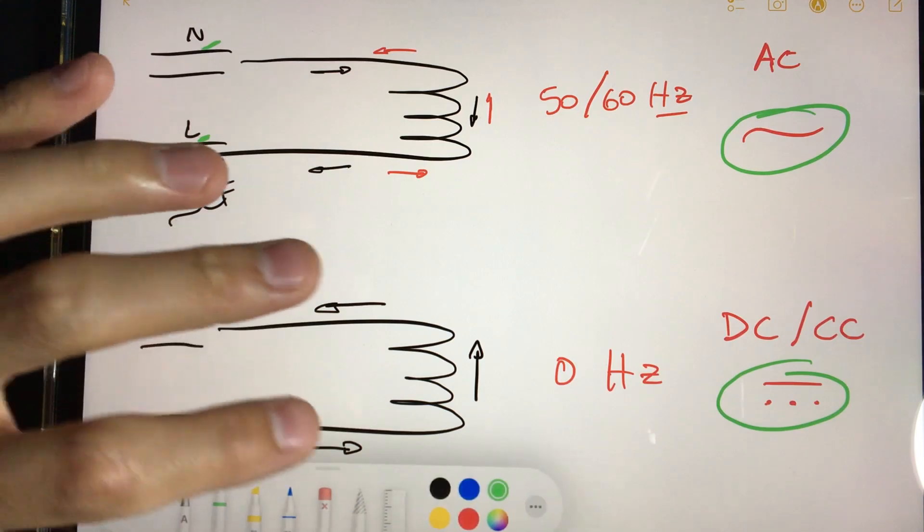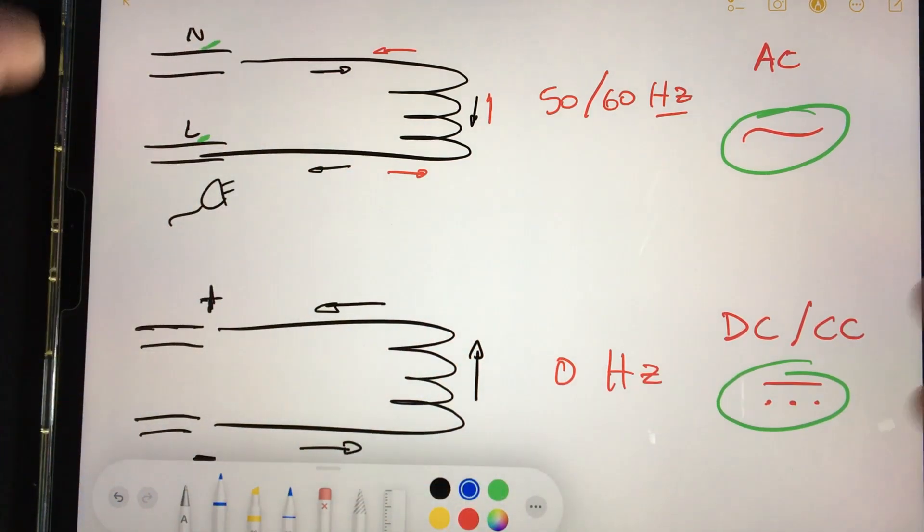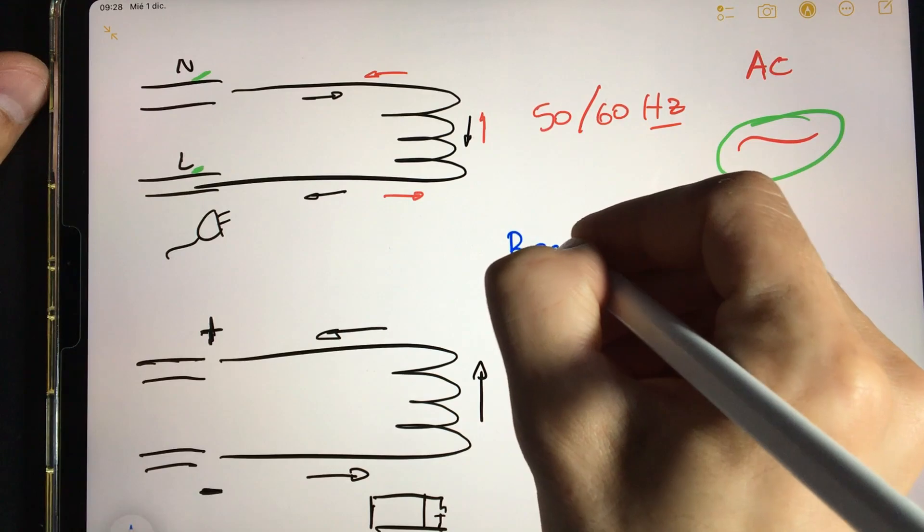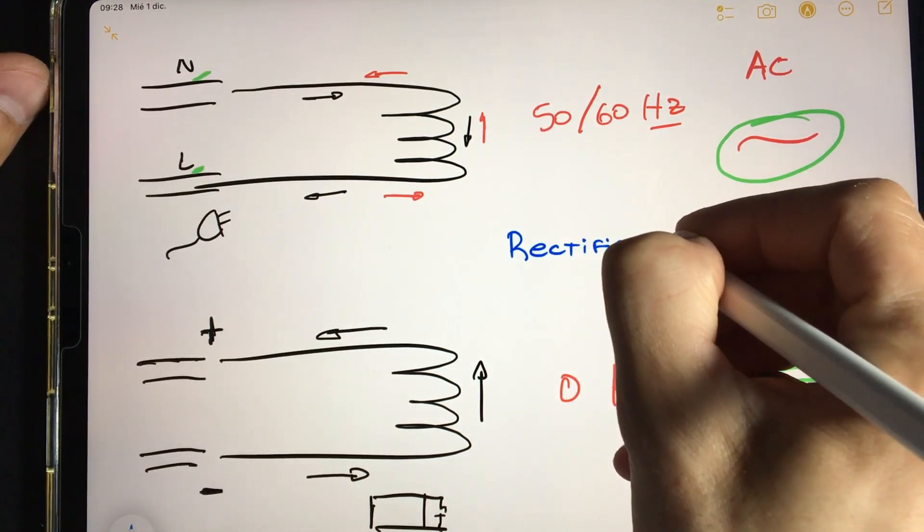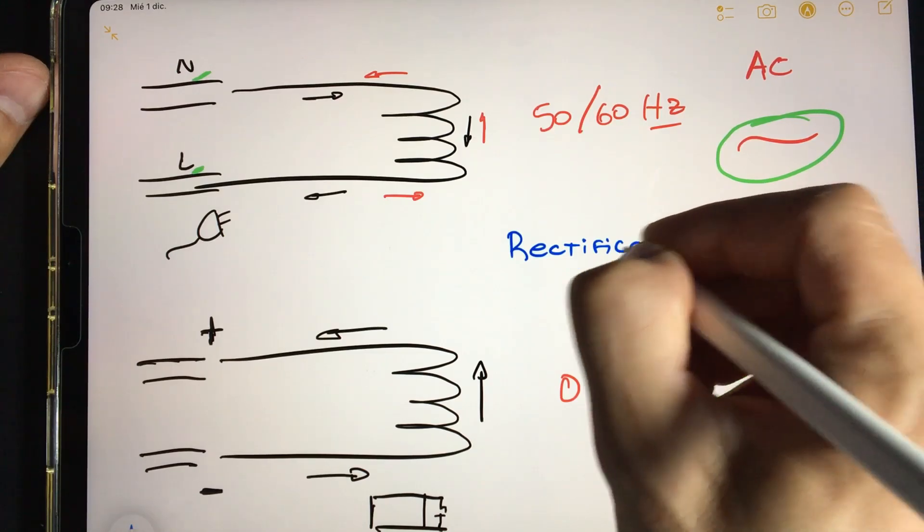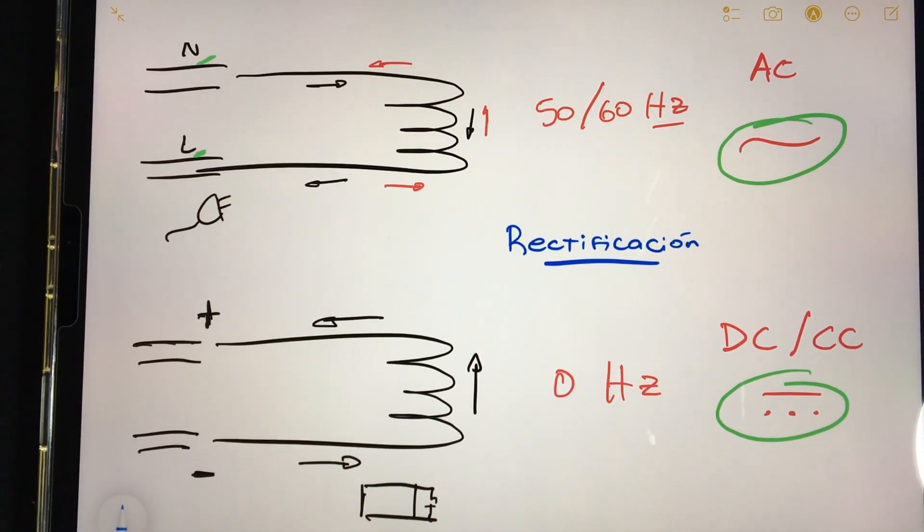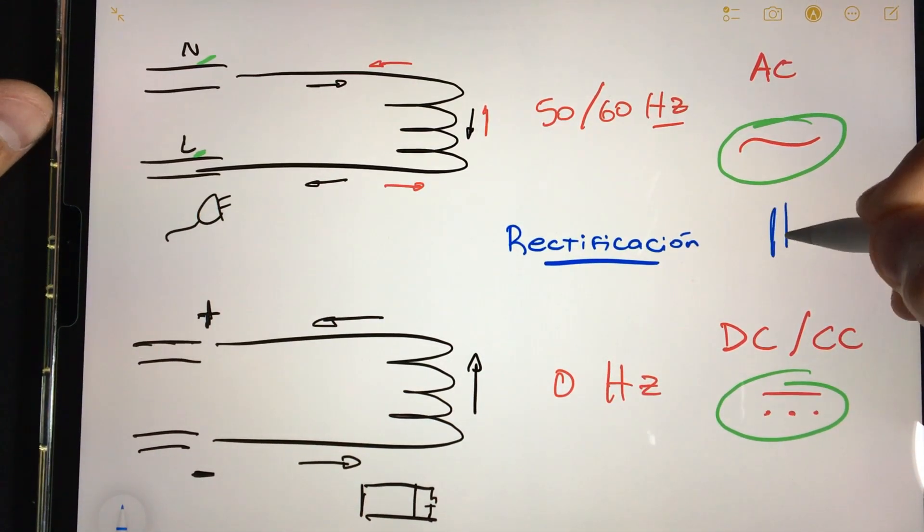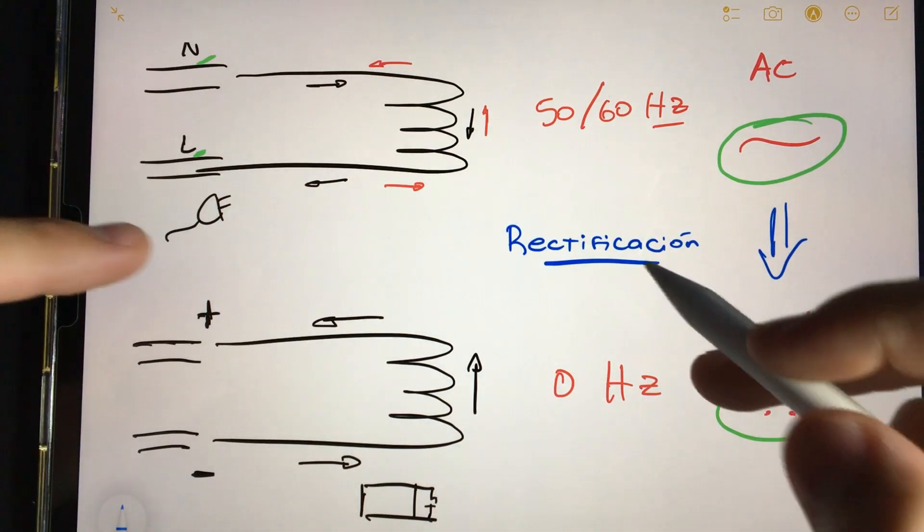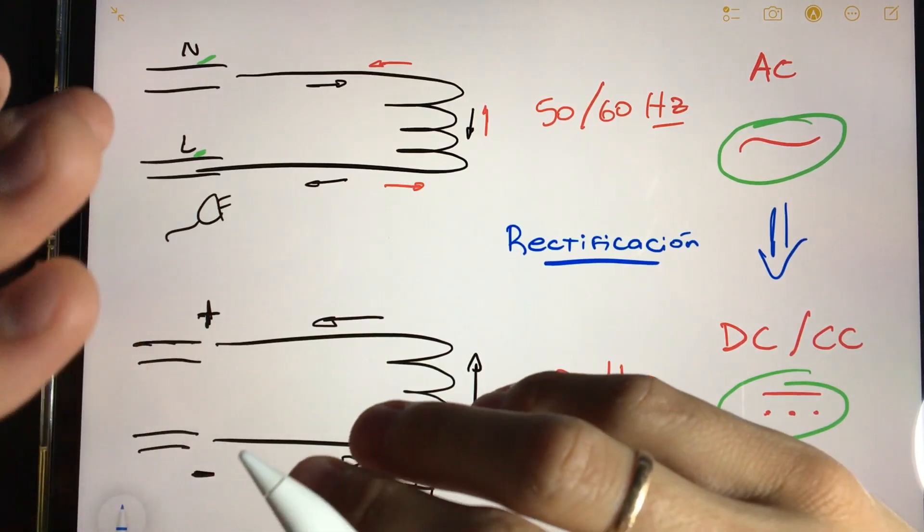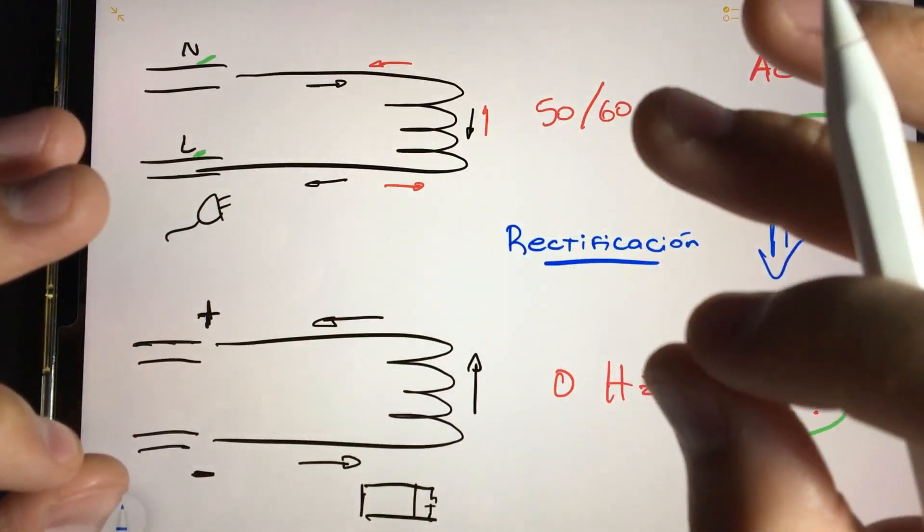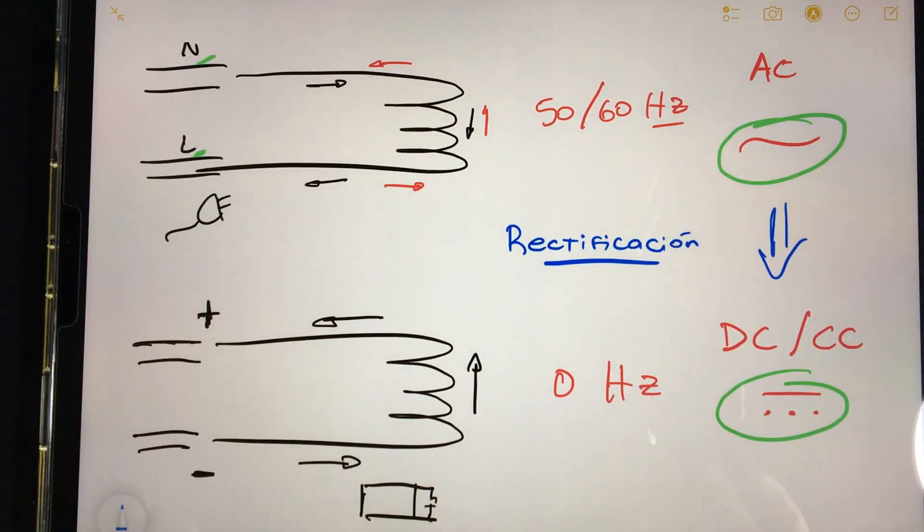So that you know the name of this conversion, we call this process rectification. It is the process in which we change alternating current to direct current. We are going to explain how this is produced inside a platelet. Comparing it with water, you will understand it perfectly.